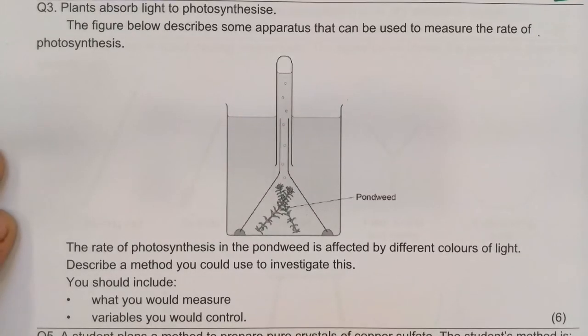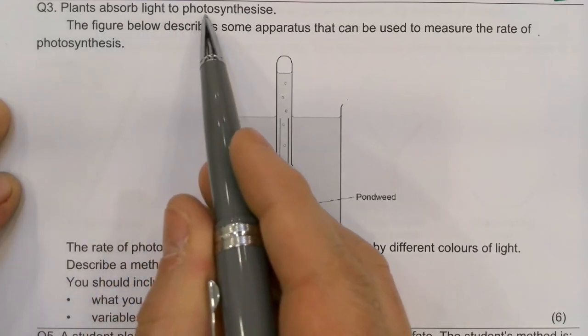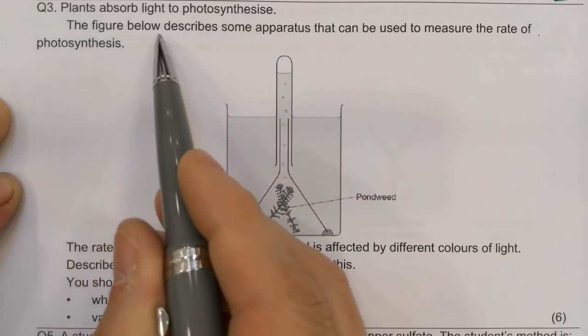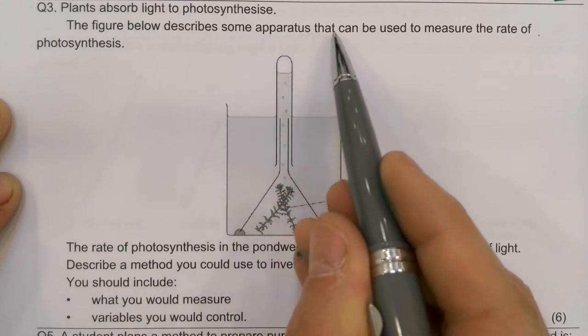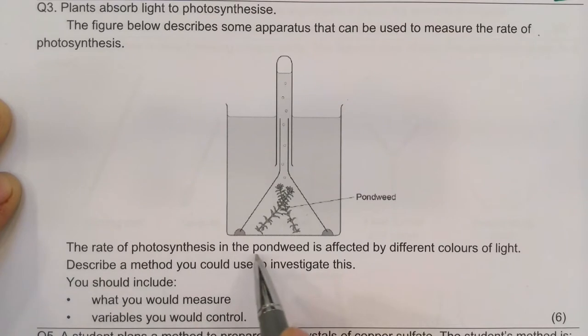OK, so let's do question three please. Plants absorb light to photosynthesize. The figure below describes some apparatus that can be used to measure the rate of photosynthesis. The rate of photosynthesis in the pondweed is affected by different colors of light. Describe a method you could use to investigate this.